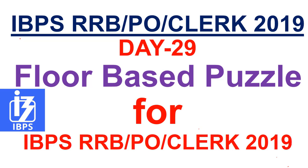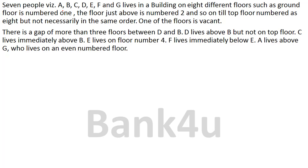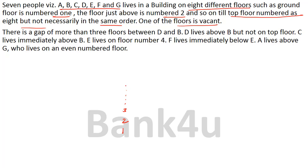So without wasting much time, let's go ahead. As you can see the question here: 7 people, that is A, B, C, D, E, F and G, live in a building on 8 different floors such that the ground floor is number 1, the floor just above it is number 2, and so on till the top floor is numbered 8 — but not necessarily in the same order. One of the floors is vacant.